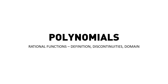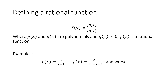In this video we're going to start talking about rational functions — we're going to define them and discuss something called discontinuities, which have to do with the domain of a rational function. A rational function is just a polynomial divided by another polynomial. Formally, where p(x) and q(x) are polynomials and q(x) is not equal to zero, f(x) is a rational function — the quotient of p(x) and q(x).